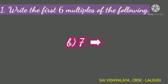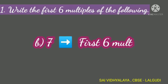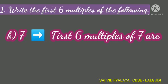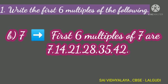Number 7. The first six multiples of number 7 are 7, 14, 21, 28, 35, 42.